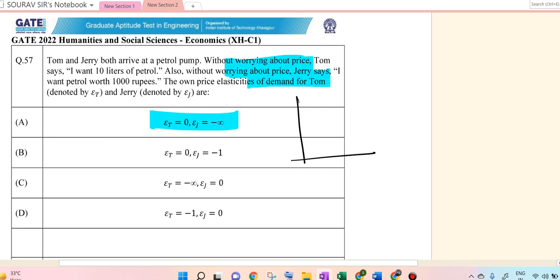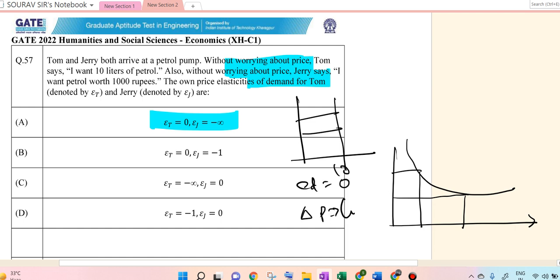As we can see here, for Tom and Jerry, if we draw two different diagrams for Tom's part, this is the line. So demand is perfectly inelastic. So that is 10, 20, price doesn't matter. So this is petrol. So E_P equal to 0 and D_P equal to constant. So for Tom, it is 0.